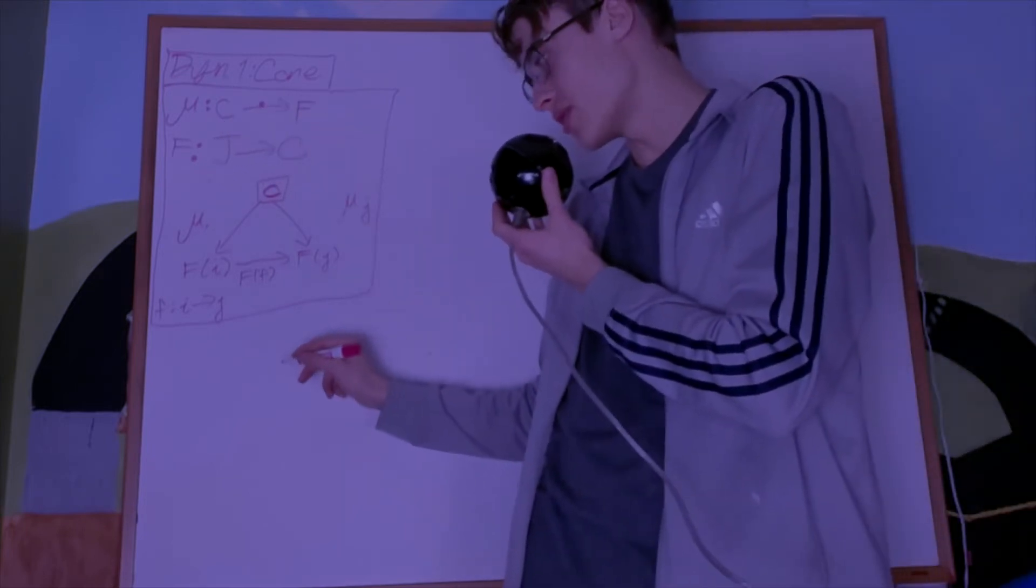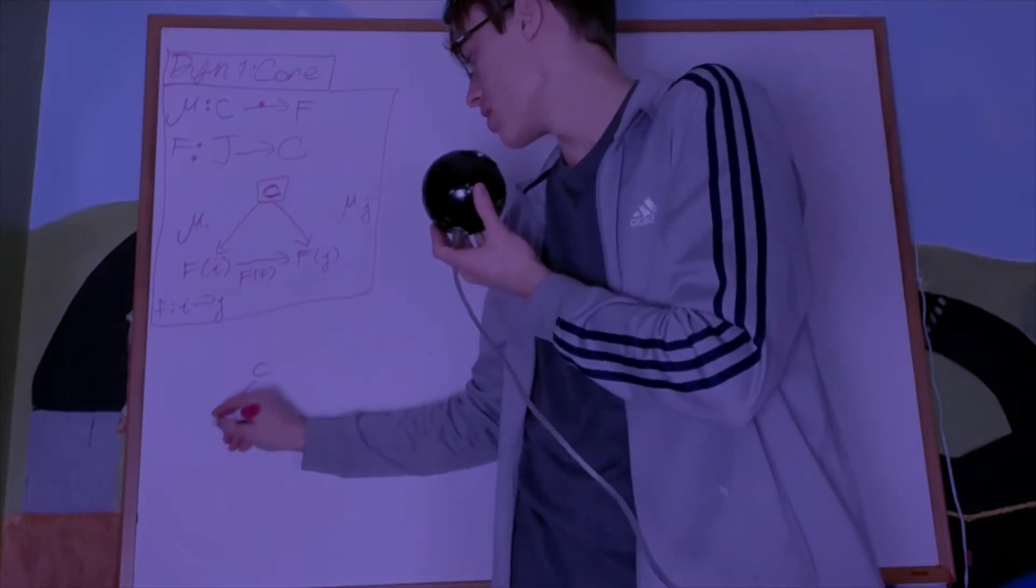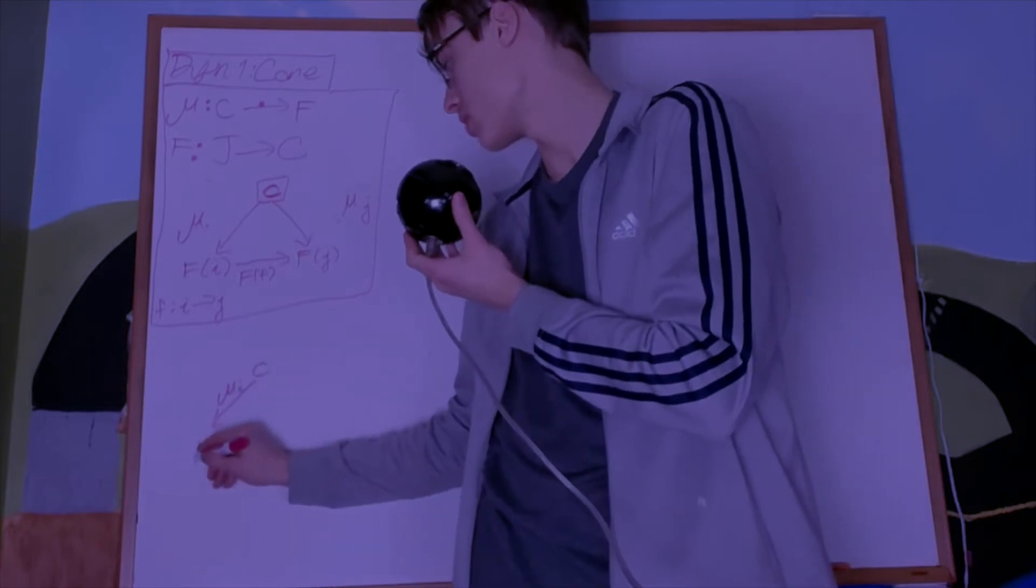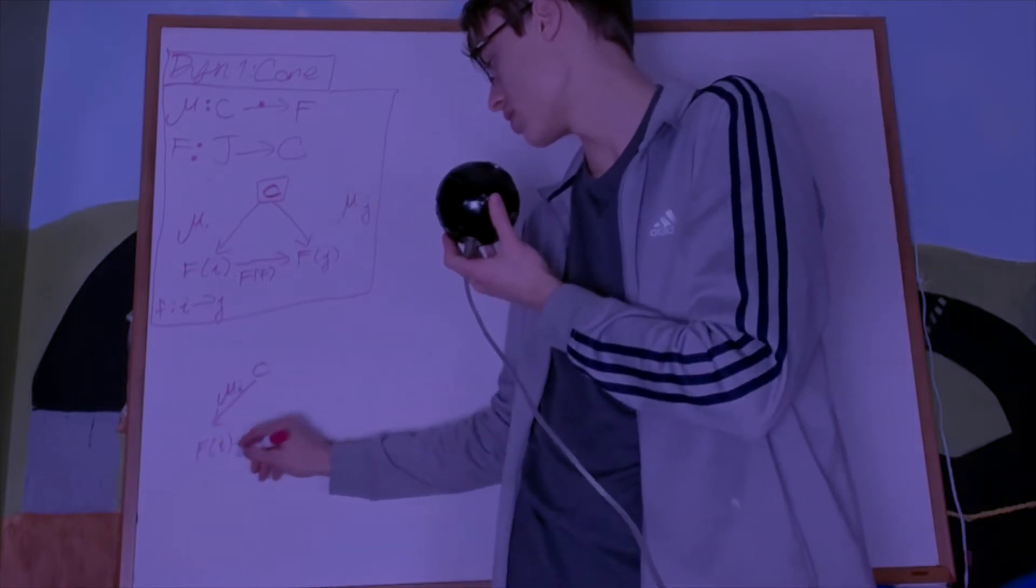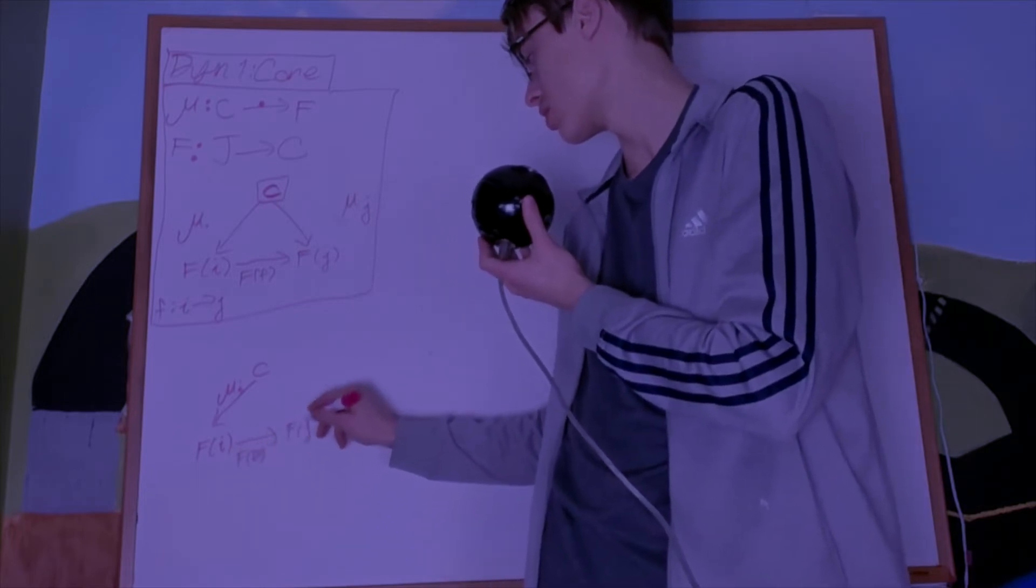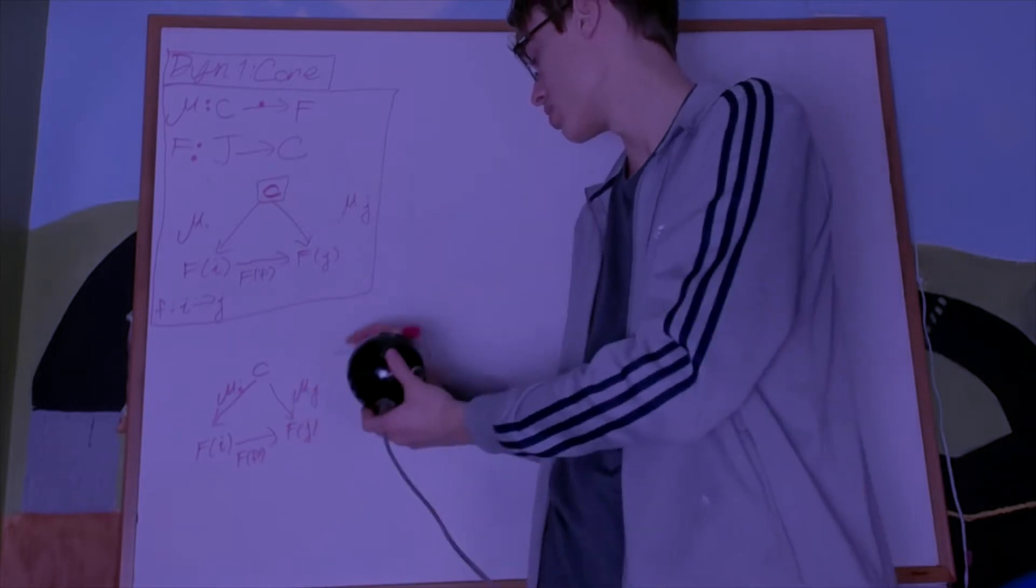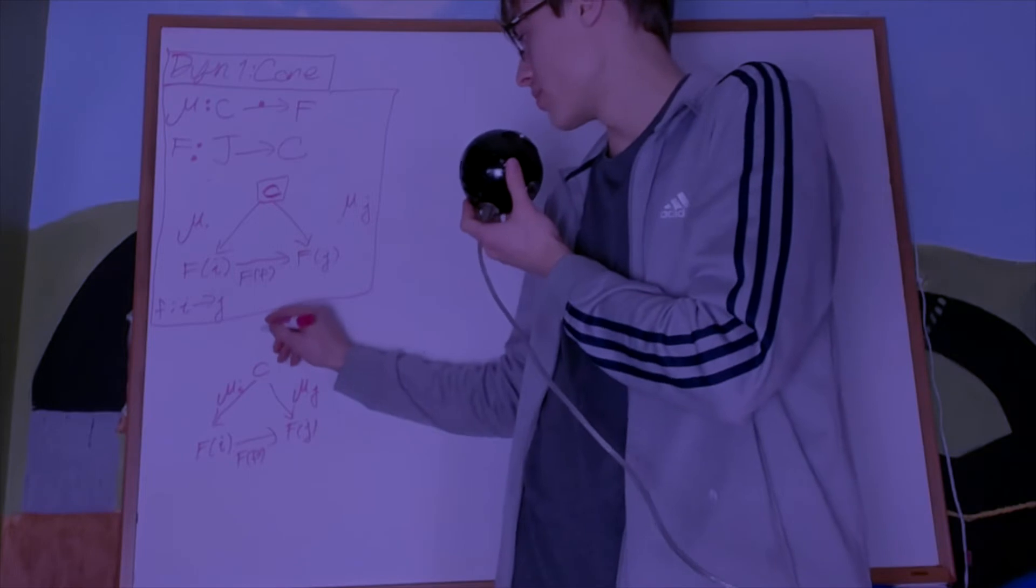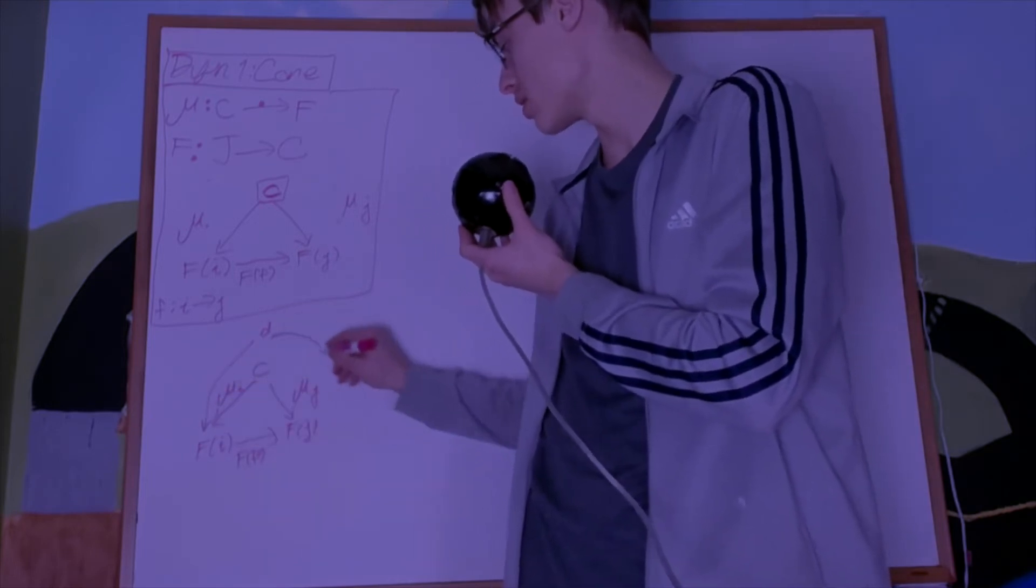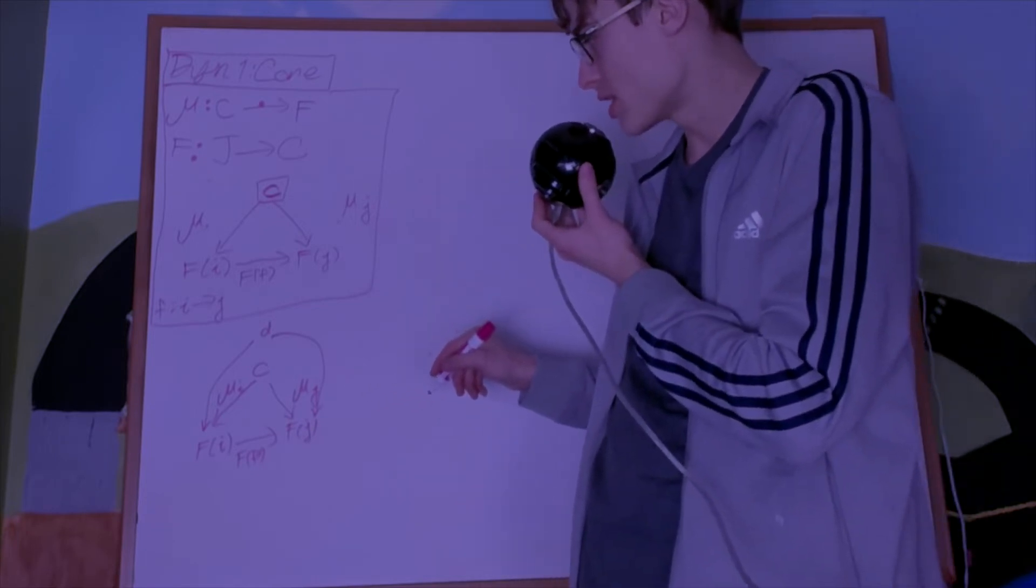Now, a cone is called universal if this specific cone, which looks like this, and I have another cone which is from a different object down to it—so it's on the same functor but with a different vertex.